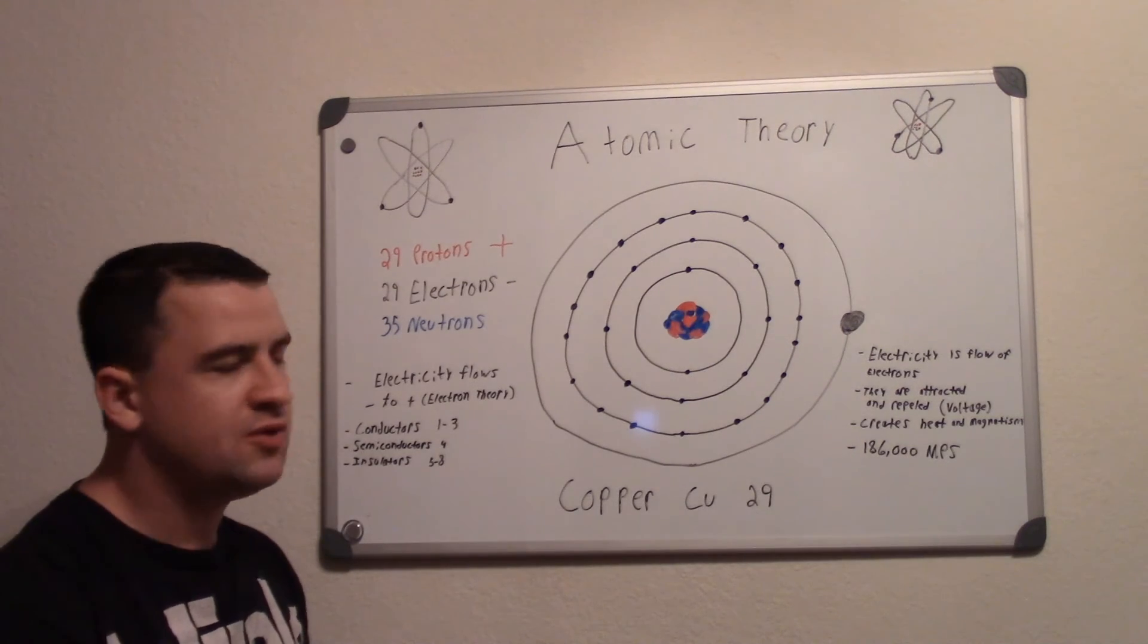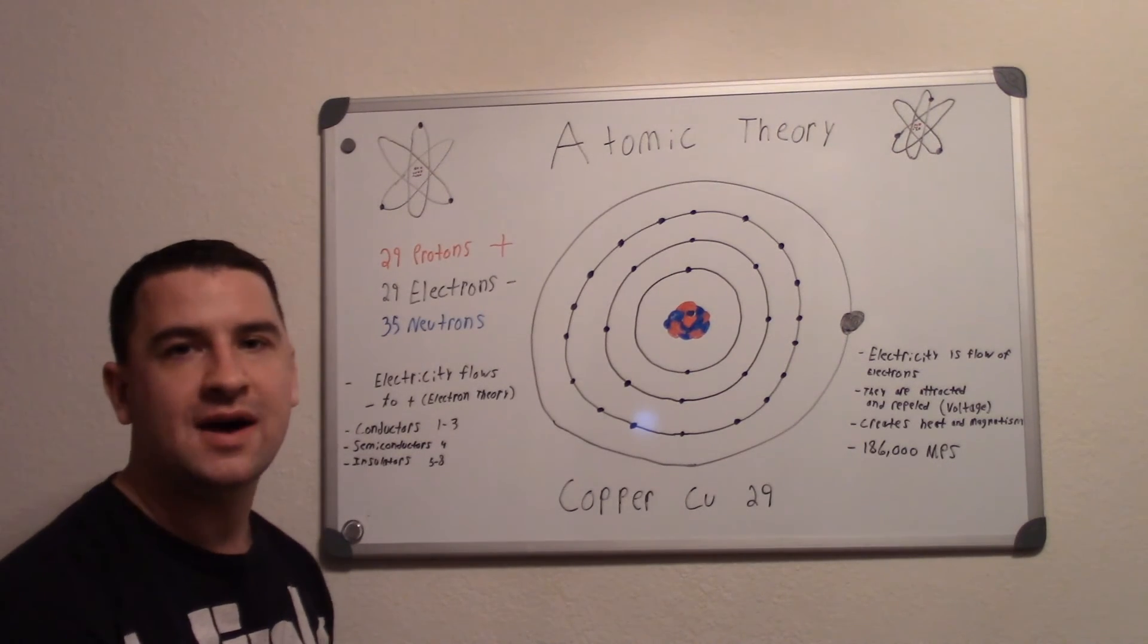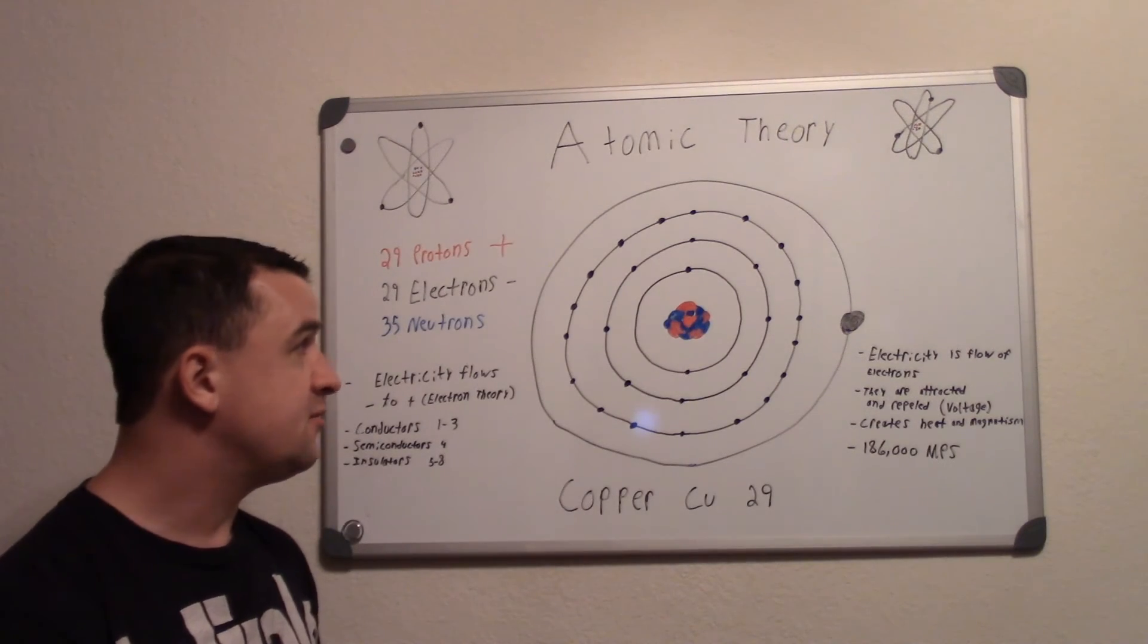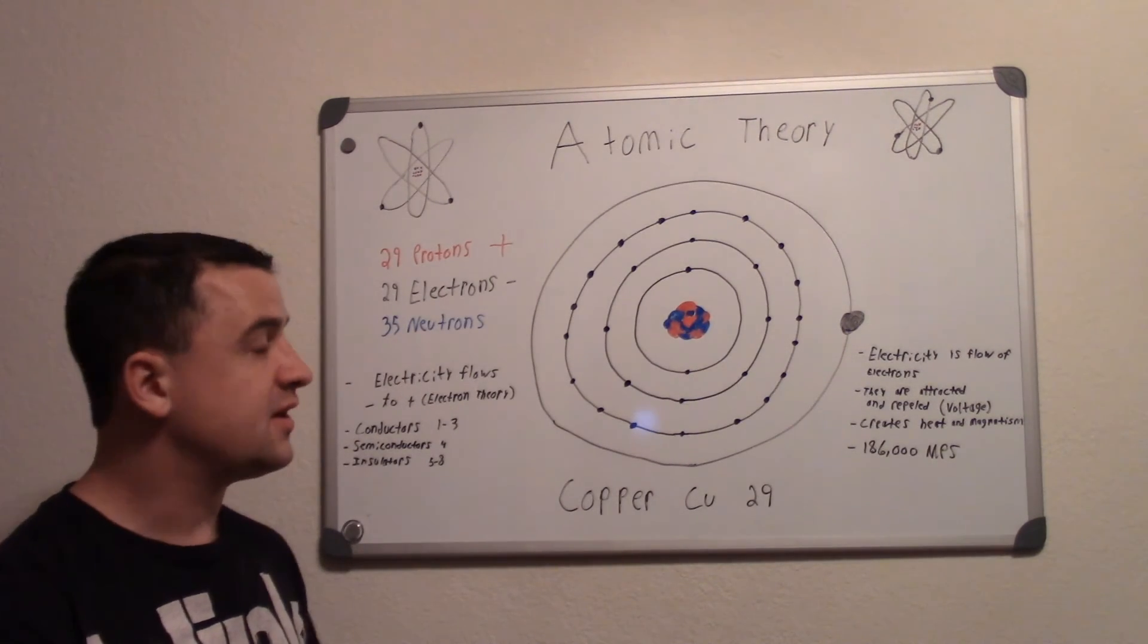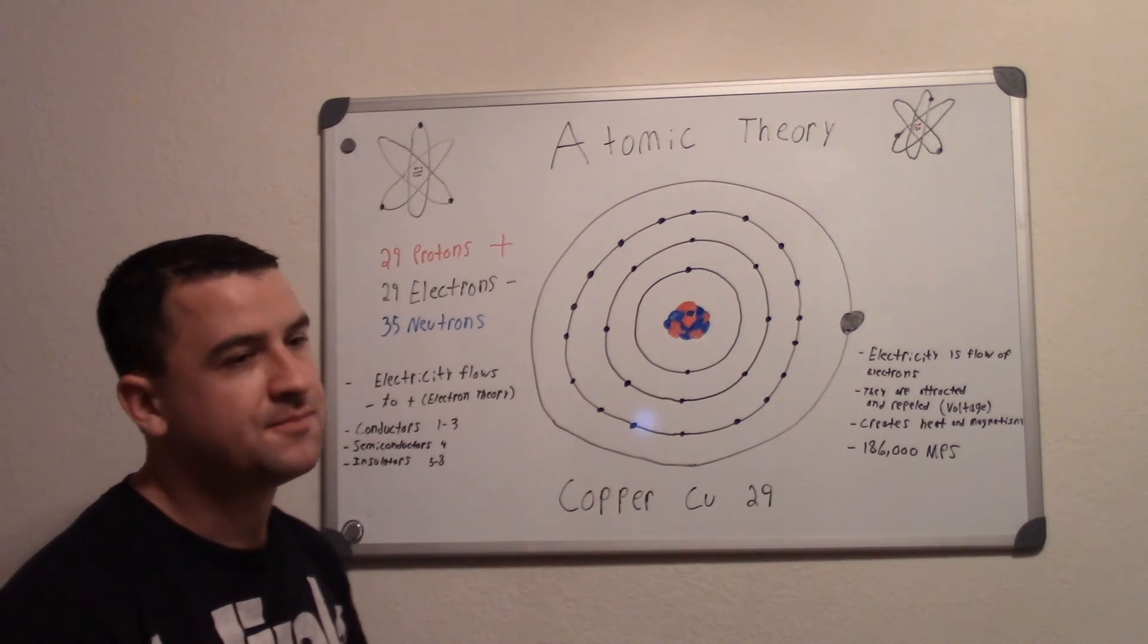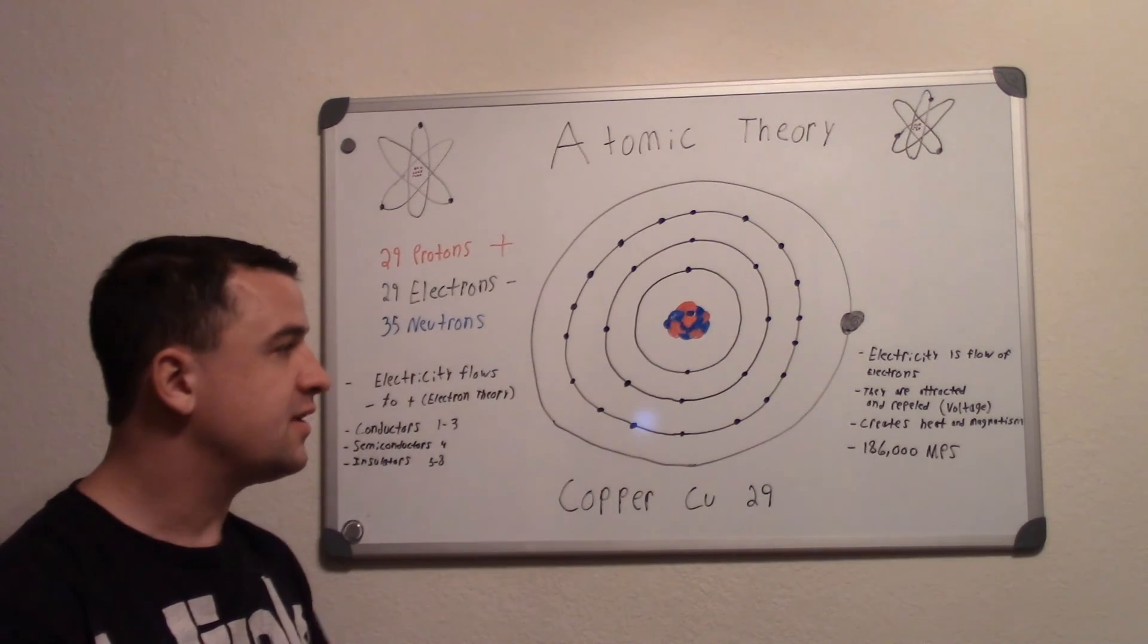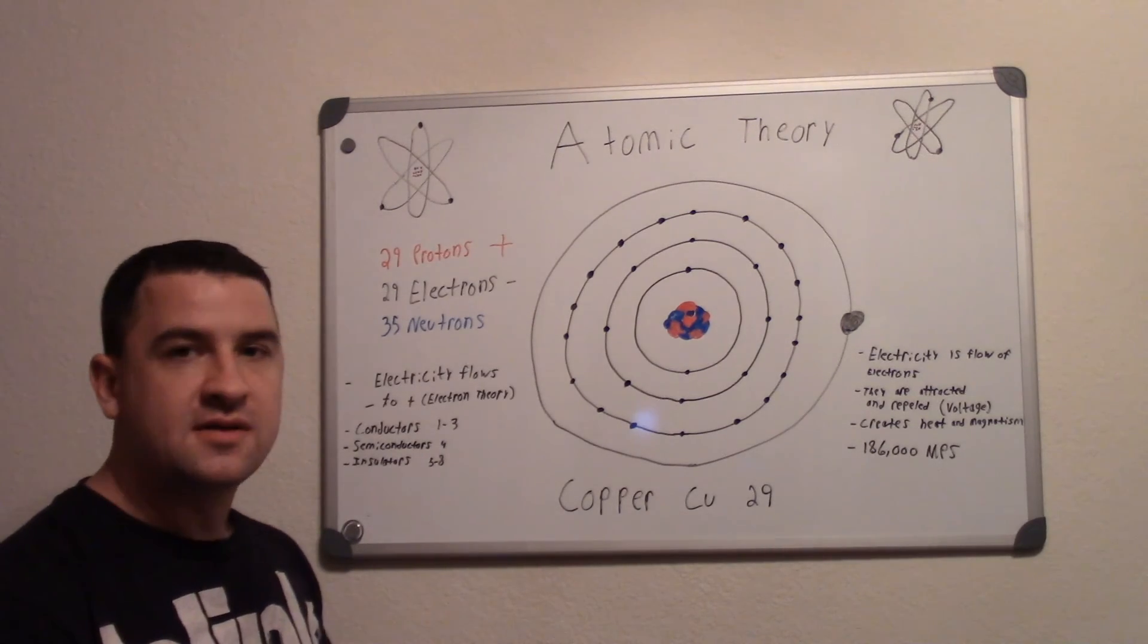And so basically, what do we use the flow of electrons for? Why, how does that create stuff? Well, electricity, which is the flow of electrons, creates two things: heat and magnetism. As the electricity flows it creates heat, that's one basic thing, and it creates magnetism.